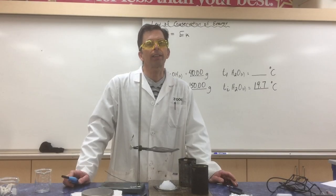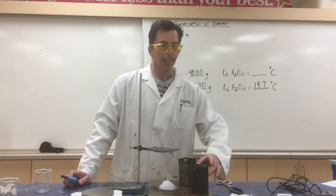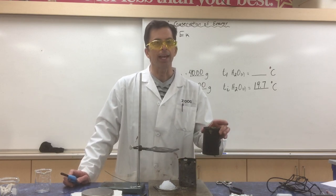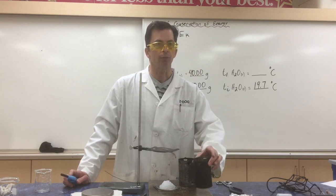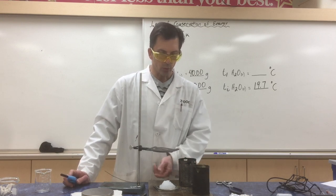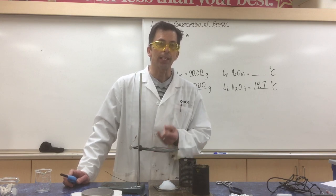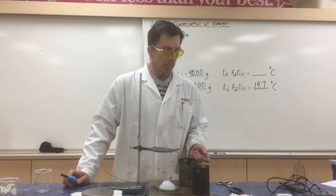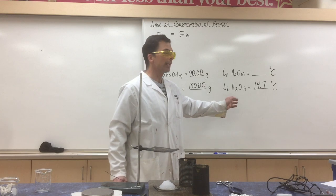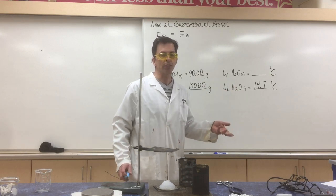We're now set to collect the data for the experiment. In the calorimeter — the top metal can — I've poured 150.00 grams of water. Remember we have 40 grams of ethanol in our calcium acetate, water, and ethanol substrate or fuel. I have measured the initial temperature of the water to be 19.7 degrees Celsius.